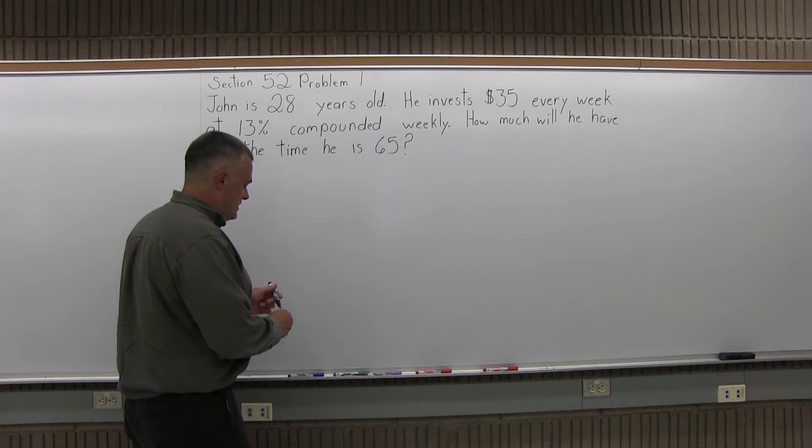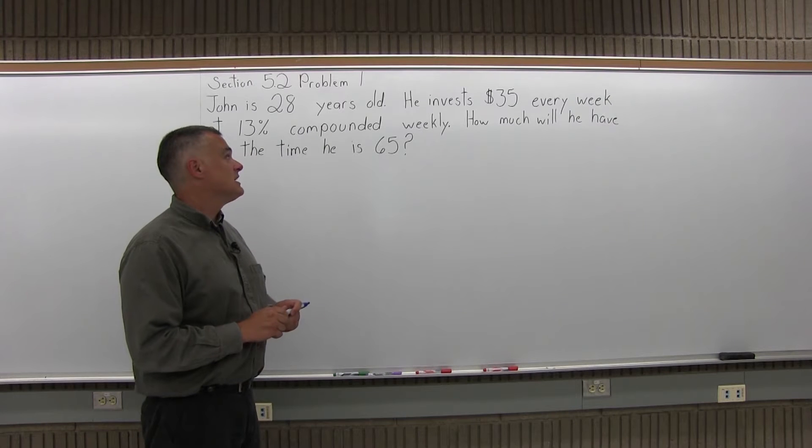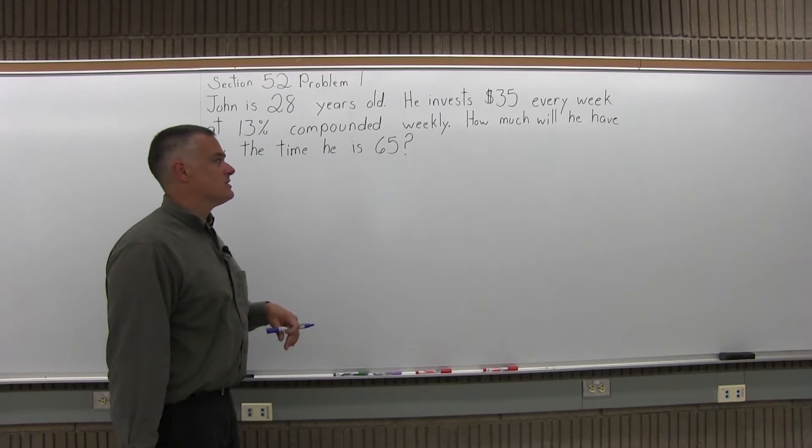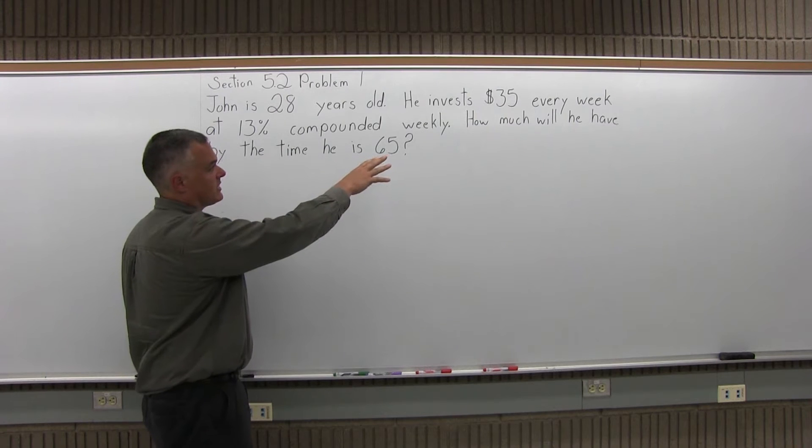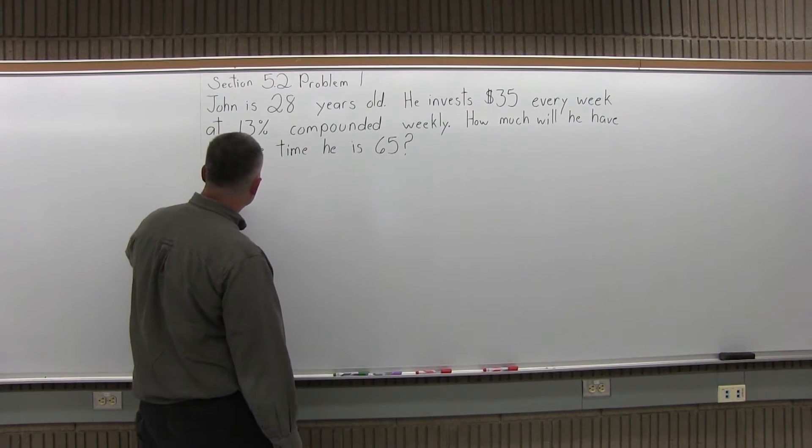So this is the annuity formula, because in this section it's either annuity or sinking fund. The annuity, you know how much you're saving and you calculate the end amount. The other one, you know the end amount, you calculate how much you save regularly. So we know how much we save regularly, we'll figure out what the end amount comes out to.